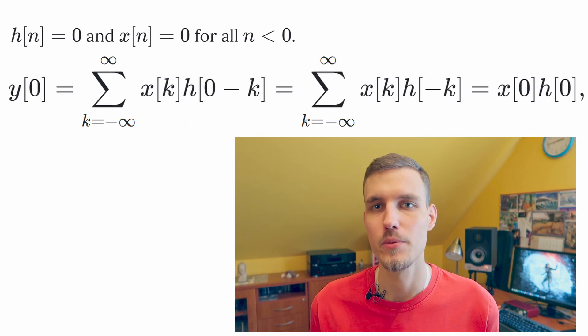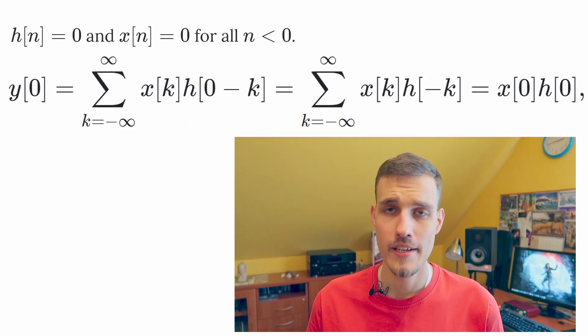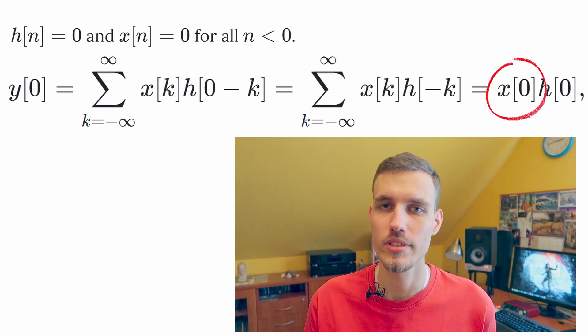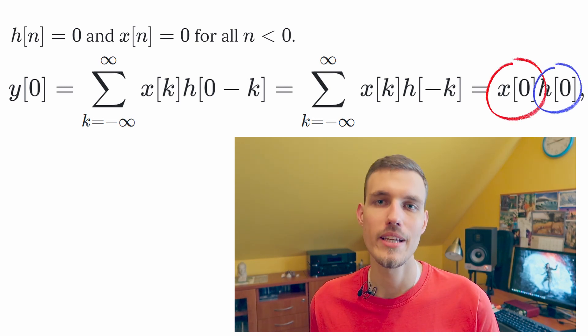Let's fix n first. What happens if we fix our n to be equal to zero? At the output we can see that we have only the product of the first sample of the input signal and the first sample of the impulse response.